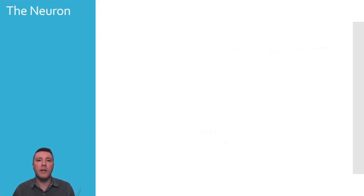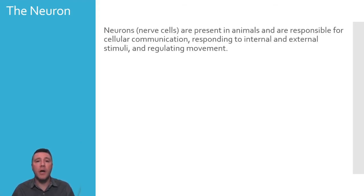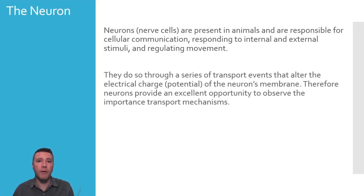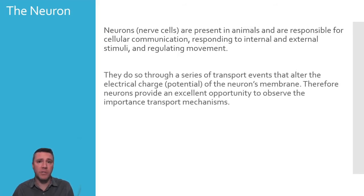Let's take a look at one final set of examples that demonstrate the importance of many of these transport mechanisms. A neuron, also known as a nerve cell, are specialized cells found in animals that are responsible for detecting and responding to stimuli, as well as regulating an animal's movement. How a neuron accomplishes this is through the transport of ions that alter the electrical charge of a membrane that all cells possess.